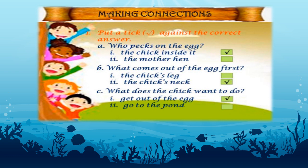What comes out of the egg first? The options given are: the chick's neck. Children, if you read the poem, the third and fourth lines are: out comes a neck, out comes a leg. So what comes first? The neck comes first. So the correct answer is the chick's neck. Put a tick against the second option: the chick's neck.